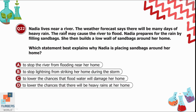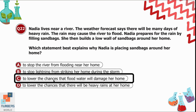Question 22: Nadia lives near a river. The weather forecast says many days of heavy rain may cause the river to flood. Nadia fills sandbags and builds a low wall around her home. Which statement best explains why? Option C — to lower the chances that flood water will damage her home — is correct. The sandbag wall cannot stop lightning or prevent rain from coming entirely.